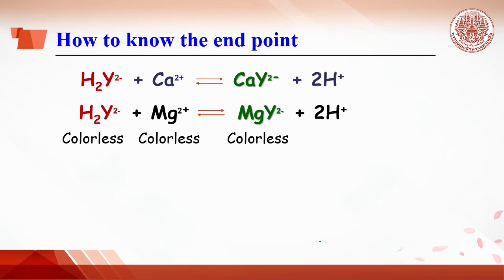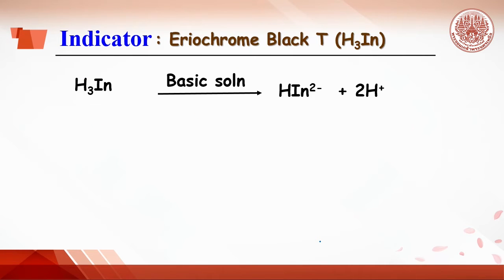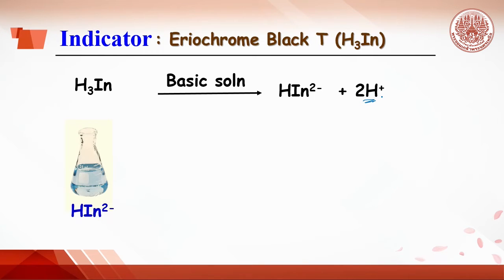Since EDTA, calcium ions, and the complex are all colorless, a special indicator is needed to detect the endpoint of this titration. Eriochrome Black T is used as the indicator. In basic solution, Eriochrome Black T loses two protons, presenting mostly in the form of a sky blue color.